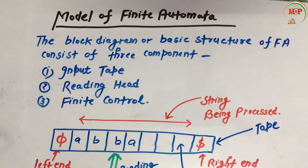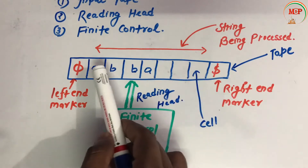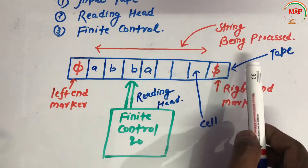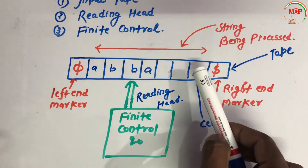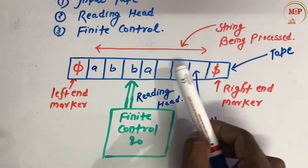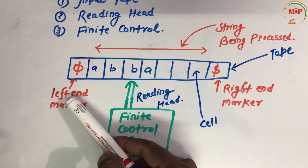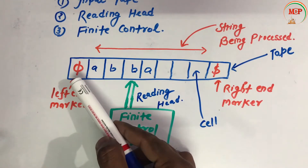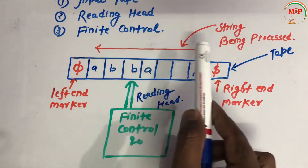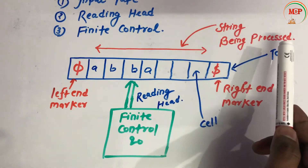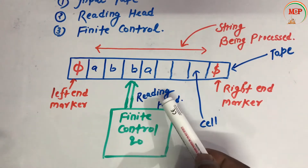Now let's see the diagram of the finite automata model. This is our tape, which is divided into a number of cells, and each cell consists of only a single alphabet. This is the left-hand marker, represented by the yen symbol, and the right-hand marker is represented by the dollar symbol. This is the string being processed. The finite control is represented by q0, and this is the reading head.